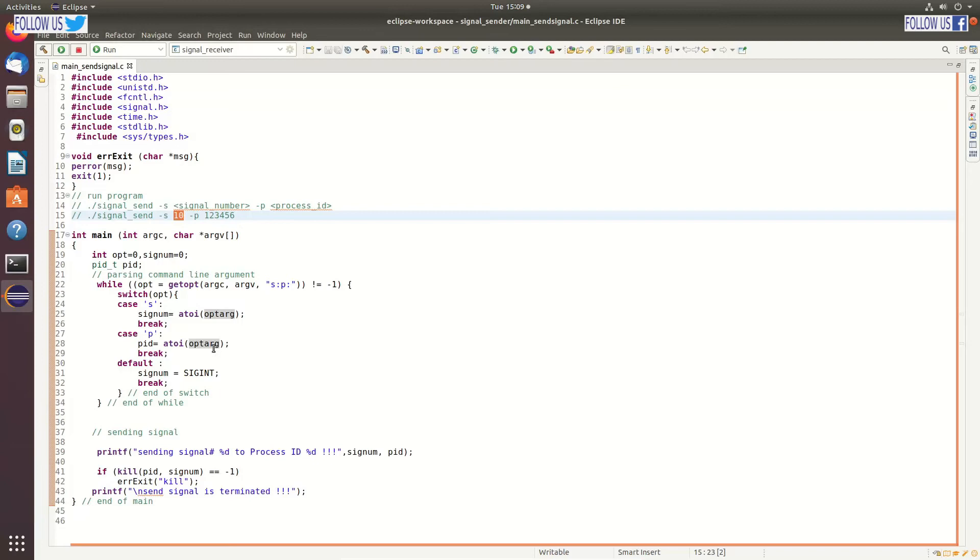And by default, we will be assigning SIGINT signal to SIGNUM variable. After that we have to use the kill API to send signal. We have to pass process ID and signal number, which we want to send. At the end we will print this message. You can see, signal send process coding is quite simple.